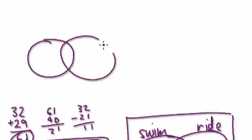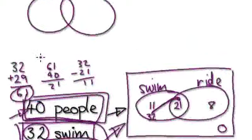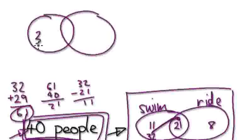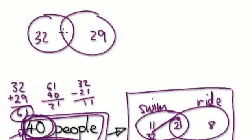So we started out like this: 32 over here and then 29 over here. But the thing is that there are only 40 people in your class, so there must be an overlap. So we've got 32 plus 29, that comes to 61.